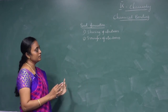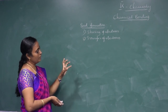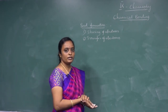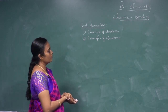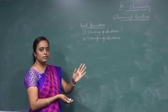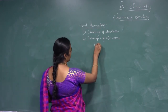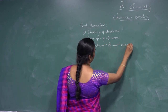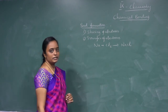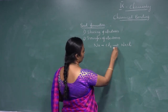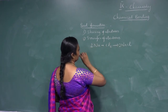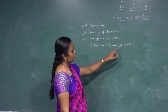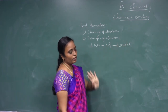Now, if I take the transfer of electrons, let me use the example of sodium chloride formation. Na combined with Cl₂ gives NaCl. Balancing: 2Na + Cl₂ → 2NaCl. How is this bond formed?